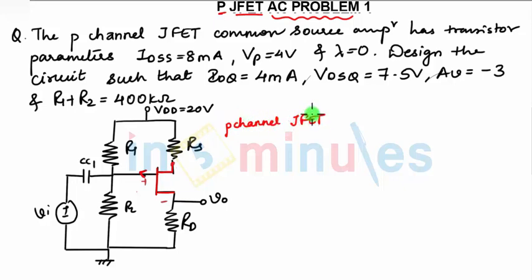Then to identify which configuration it belongs to, the three possible configurations are: common source, common gate, and common drain.